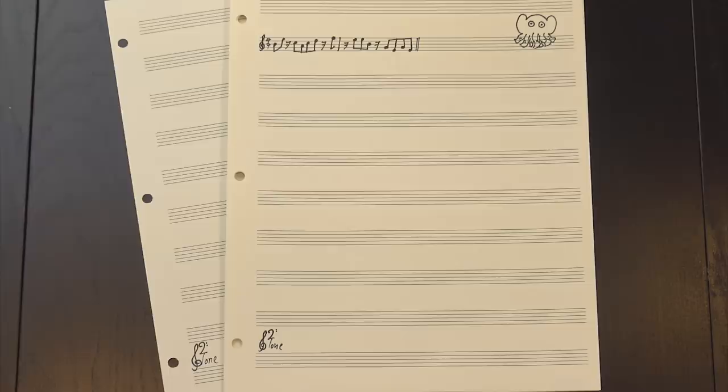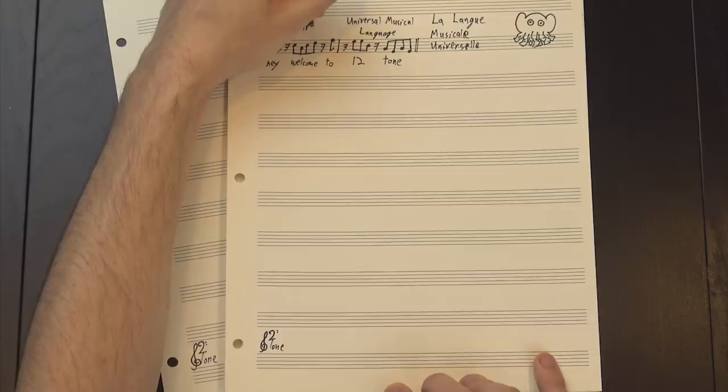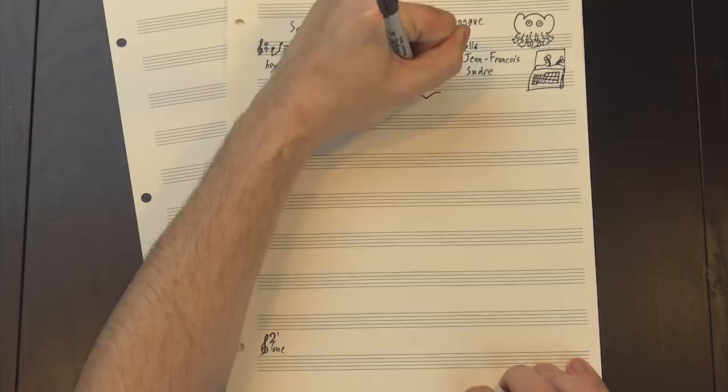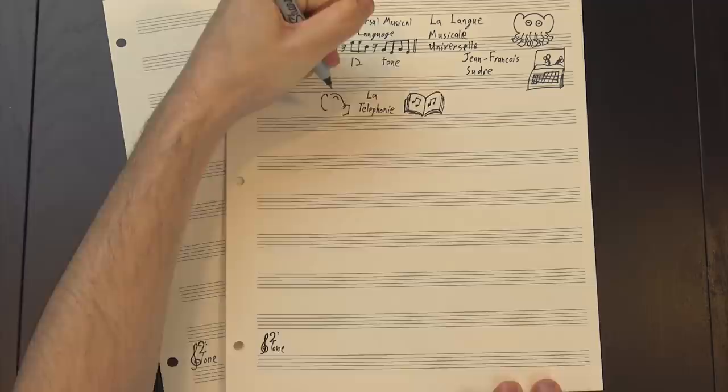Sol Ré Sol was invented in the mid-19th century by a French musician named Jean-Francois Soudre, who'd become fascinated with the idea of a language made of music. His first attempt, which he called la téléphonie, was fairly straightforward. He just took the French alphabet and assigned each letter to a musical note. This wasn't really a new language, though. It was more like a code, and it found its home where most codes do, the military.